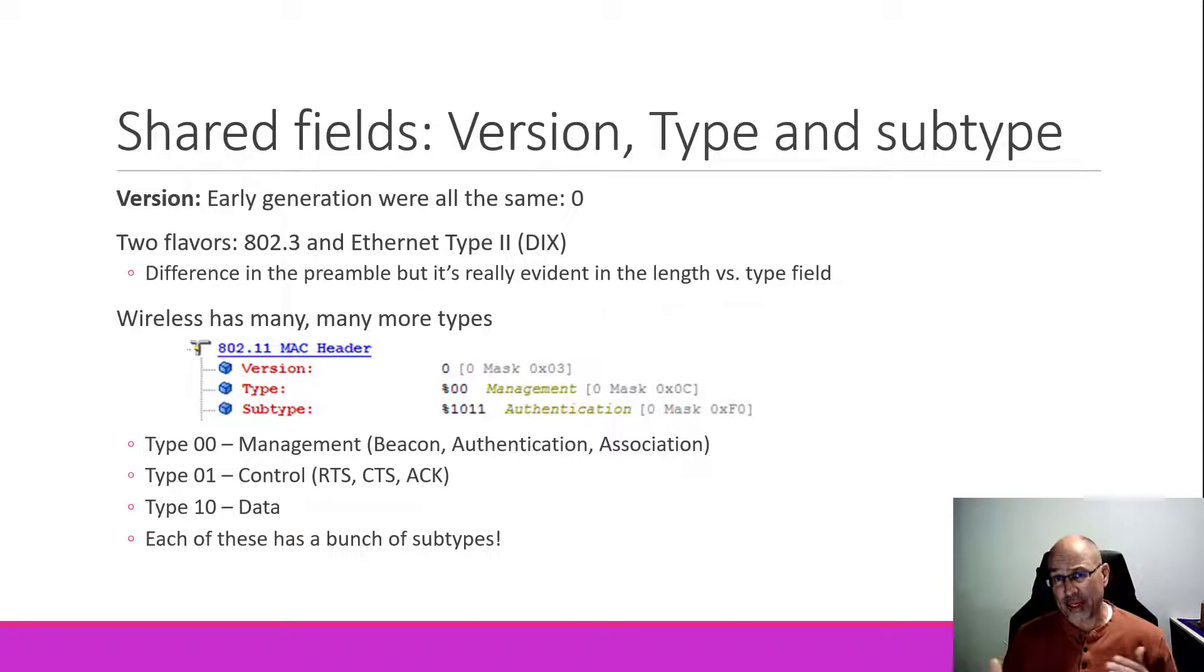Following this, we have the type and subtype. Previously, we're used to pretty much two flavors of Ethernet - we had 802.3, and then we had Ethernet type 2, or the Dix type. The real difference between those two was a little bit of a change in the preamble, but really, the meaty thing in the middle that we really cared about was the type or the length. Ethernet type 2 had a type, and we saw 0800 for IPv4, 0806 for ARP, and then 802.3 had a length.